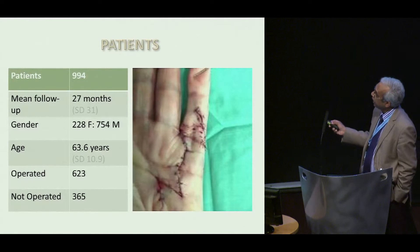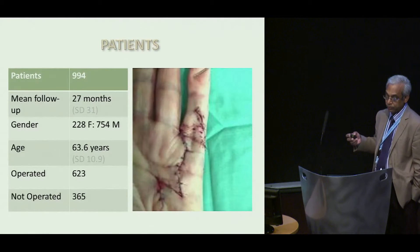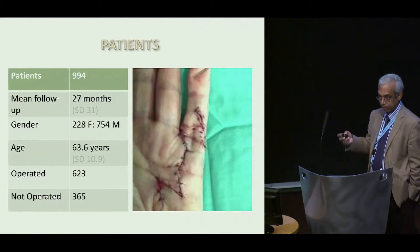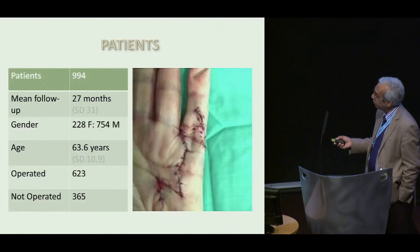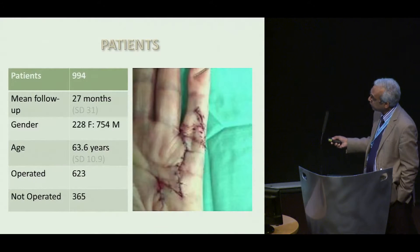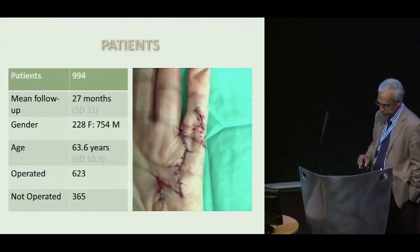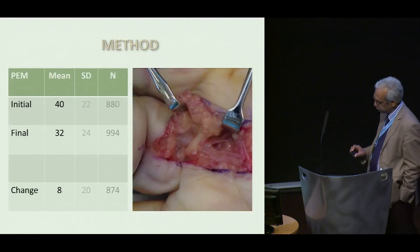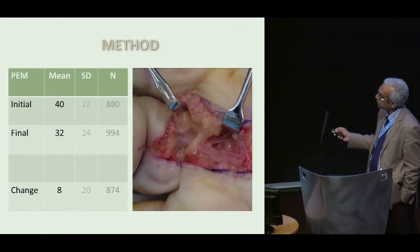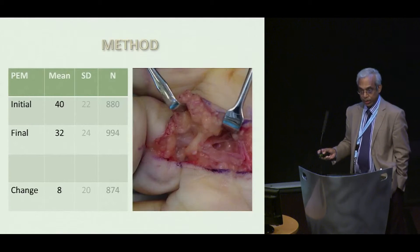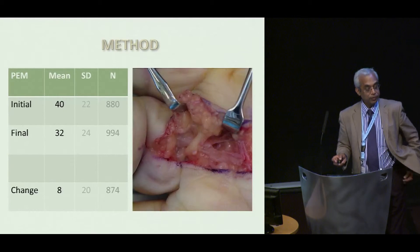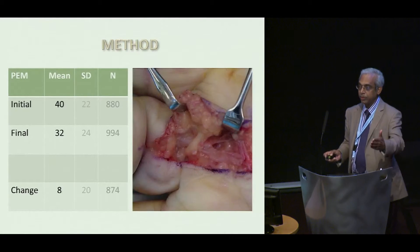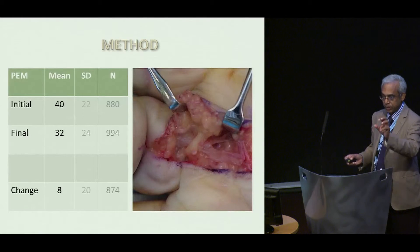Here you have the patients. The mean follow-up is over two years. As we know, most of the recurrences and most of the change occurs in the first year in most patients after Dupuytren's. Note that two out of three were operated and one out of three was not operated in our patient group. The initial PEM score was 40, and the final one at 27 months was 32, so the mean difference is only eight, and that is quite shocking. It makes you think that even when we believe our goniometry is improving, what the patient perceives is not high.